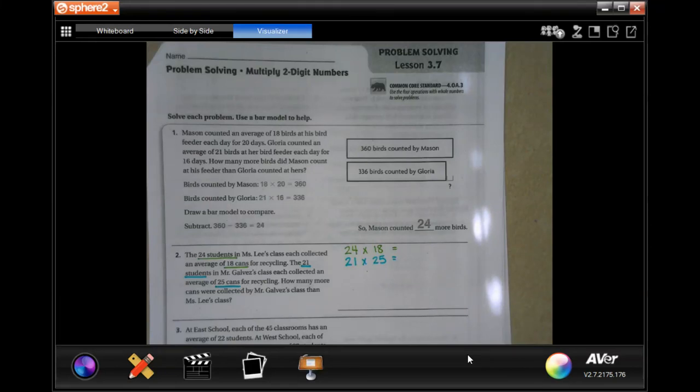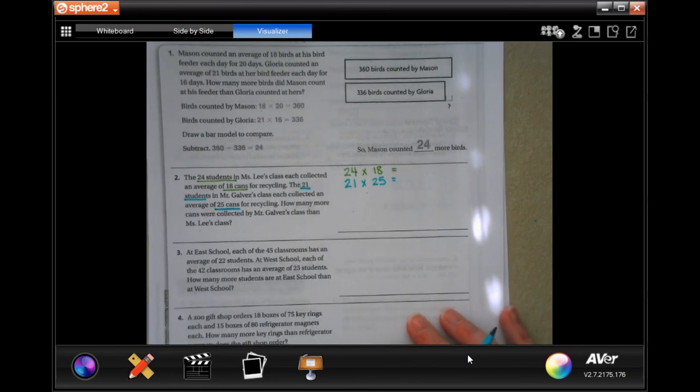Hi guys, welcome to fourth grade chapter three lesson seven. We're going to go ahead and get started with number two. So these are going to be two three-step problems.